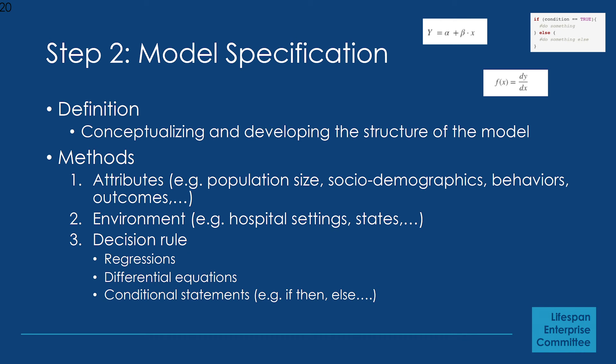Next, you specify the model — define the structure, basically the backbone. You define the attributes: population size, sociodemographics, age, sex, behaviors, and the outcomes of interest. You define the environment in which this happens. Most importantly, you have to decide on the decision rules, which are really important — if they're wrong, your model is wrong. Same for the parameters. Remember: all models are wrong, but some are useful. We use different rules such as those based on regression models, differential equations, or conditional statements.